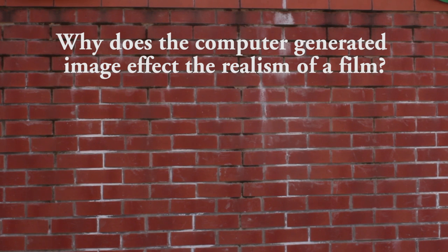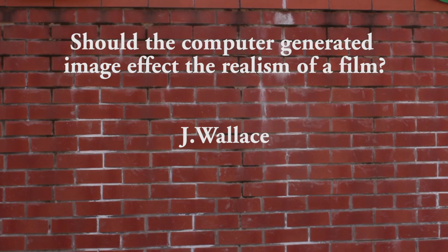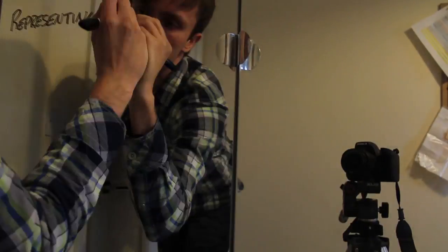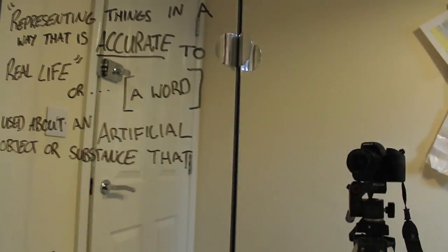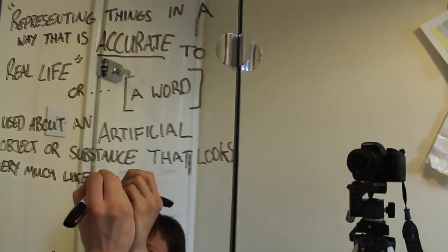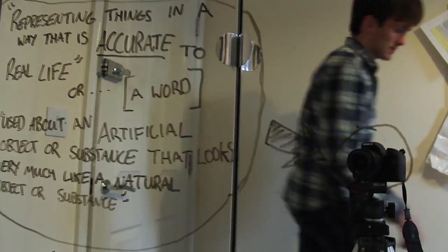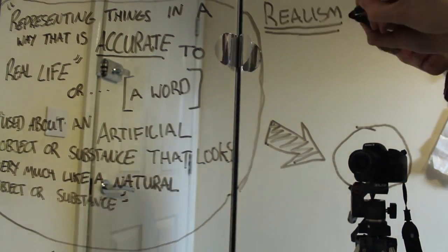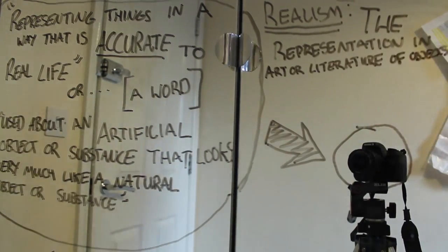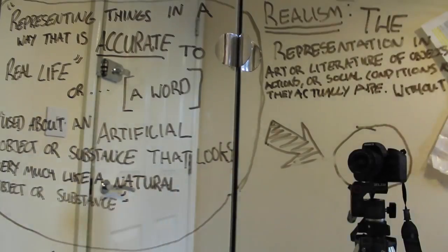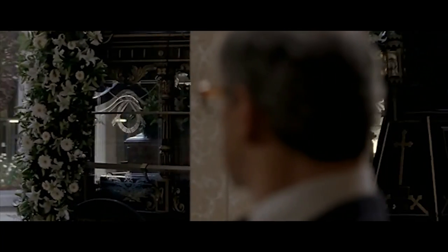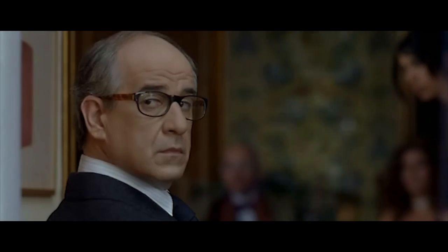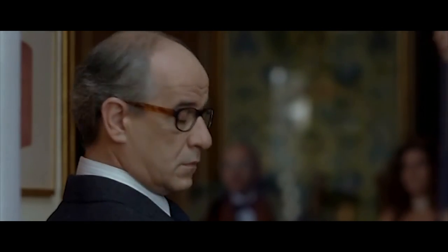Why does the computer-generated image affect the realism of a film? Or rather, should the computer-generated image affect the realism of a film? What exactly is realism? Representing things in a way that is accurate to real life, or a word used about an artificial object or substance that looks very much like a natural object or substance. When realistic is taken into the context of film, this is where realism is conceptualised — the representation of art or literature of objects, actions, or social conditions as they actually are, without idealisation or representation in abstract form. A film made in realism strives to represent life in as many aspects as possible so as to create a believable and recognisable world for an audience.